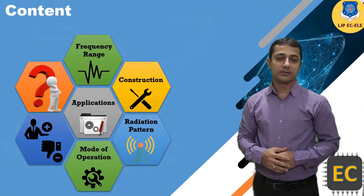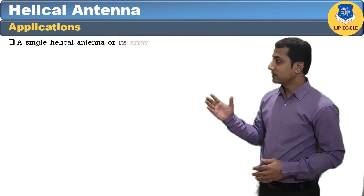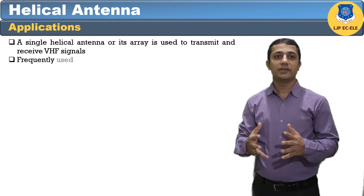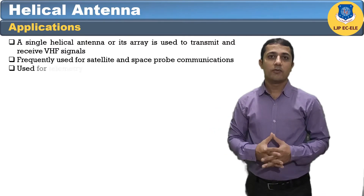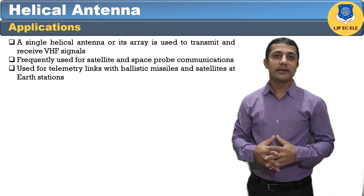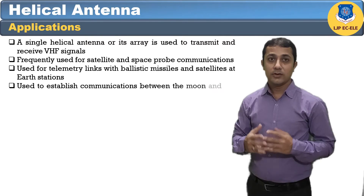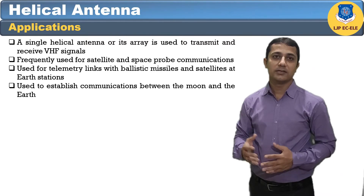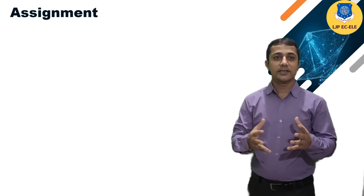Applications of helical antennas include: a single helical antenna or its array is used to transmit and receive VHF signals; frequently used for satellite and space probe communications; used for telemetry links with ballistic missiles and satellites at earth stations; used to establish communication between the moon and the earth; and applications in radio astronomy.